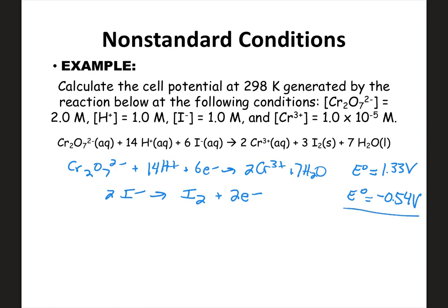Adding those up gives E naught = 0.79 V. Remember, that's not the final answer — it's what you'd expect at standard conditions. Now I need to continue and find Q to plug into the Nernst equation. Q equals the concentration of products over reactants, and solids and liquids don't participate in equilibrium.